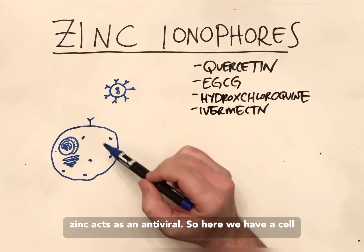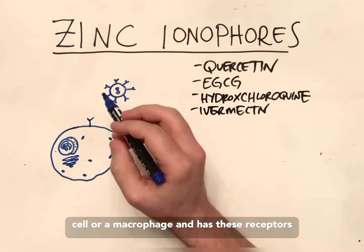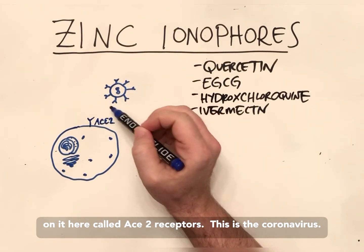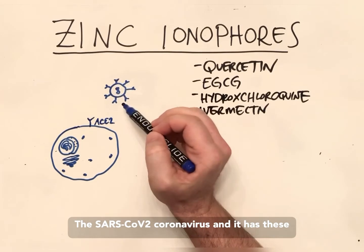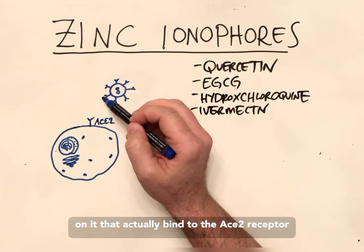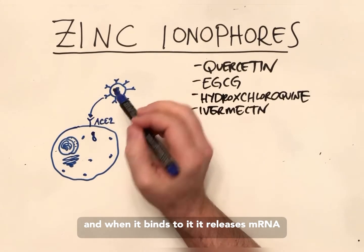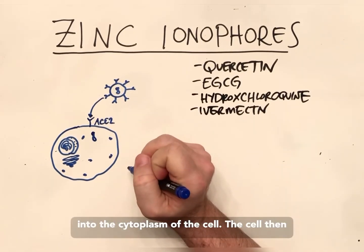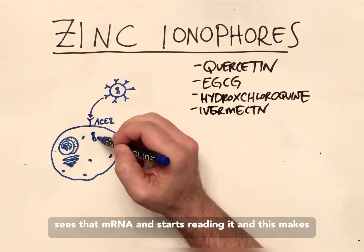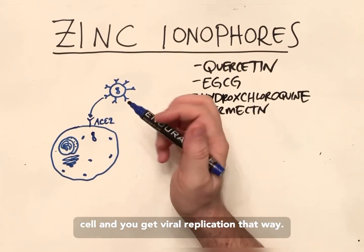Here we have a cell — this can represent either a lung epithelial cell or a macrophage — and it has receptors on it called ACE2 receptors. This is the SARS-CoV-2 coronavirus, and it has these little spikes on it that bind to the ACE2 receptor. When it binds, it releases its mRNA into the cytoplasm of the cell. The cell then reads that mRNA, makes copies of the virus, kills the cell, and you get viral replication that way.